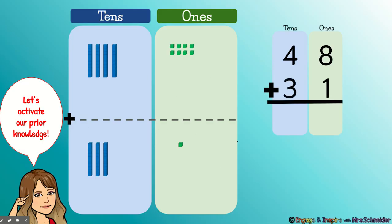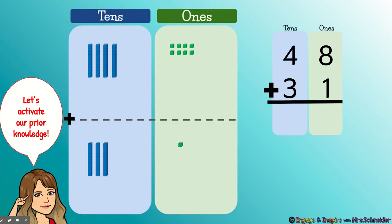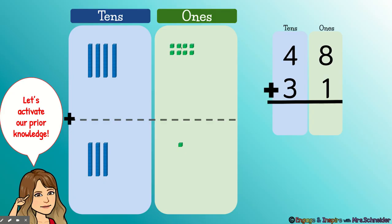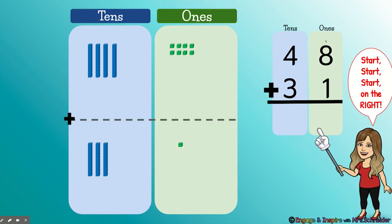So 48 plus 31, and we already know what the answer is going to be because we could just add up all of the base 10 blocks. So we know, without even solving our algorithm, that the answer to 48 plus 31 is 10, 20, 30, 40, 50, 60, 70, 71, 72, 73, 74, 75, 76, 77, 78, 79. We already know the answer is going to be 79. Now let's look over at our algorithm.